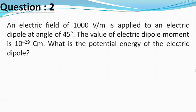Our question is: An electric field of 1000 volts per meter is applied to an electric dipole at an angle of 45 degrees. The value of the electric dipole moment is 10 raised to power minus 29 coulomb-meter. What is the potential energy of the electric dipole?